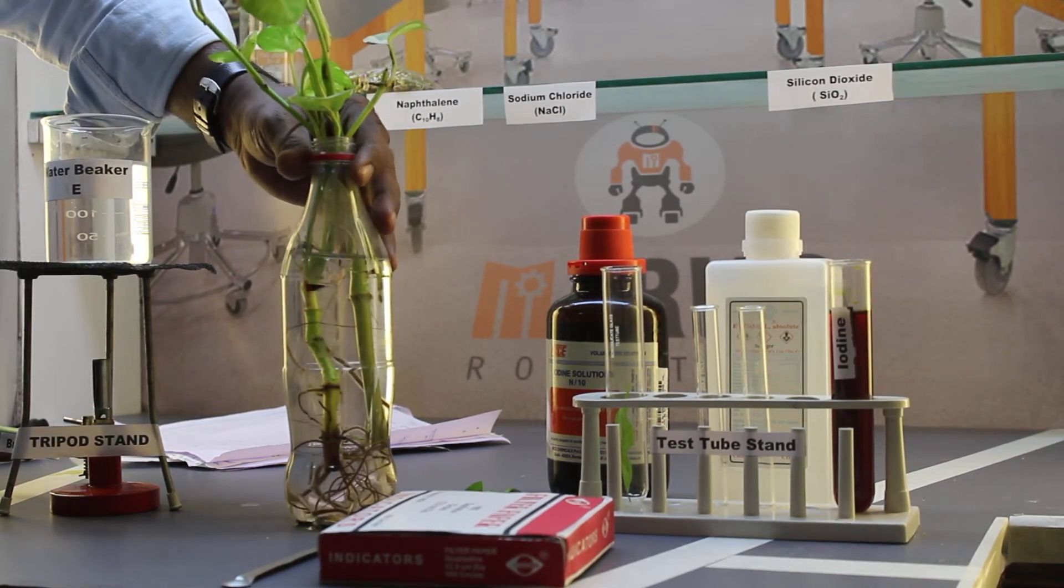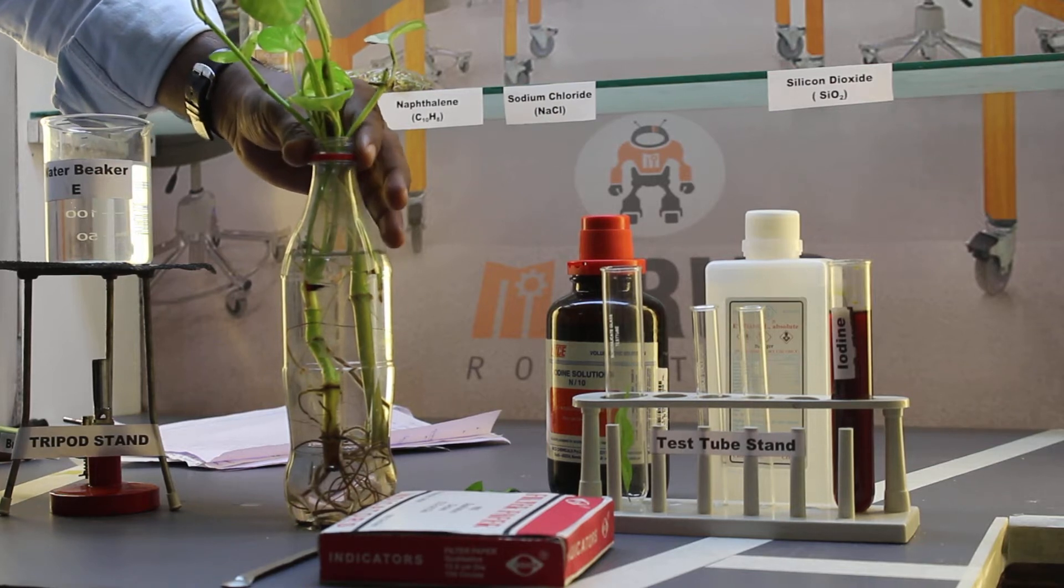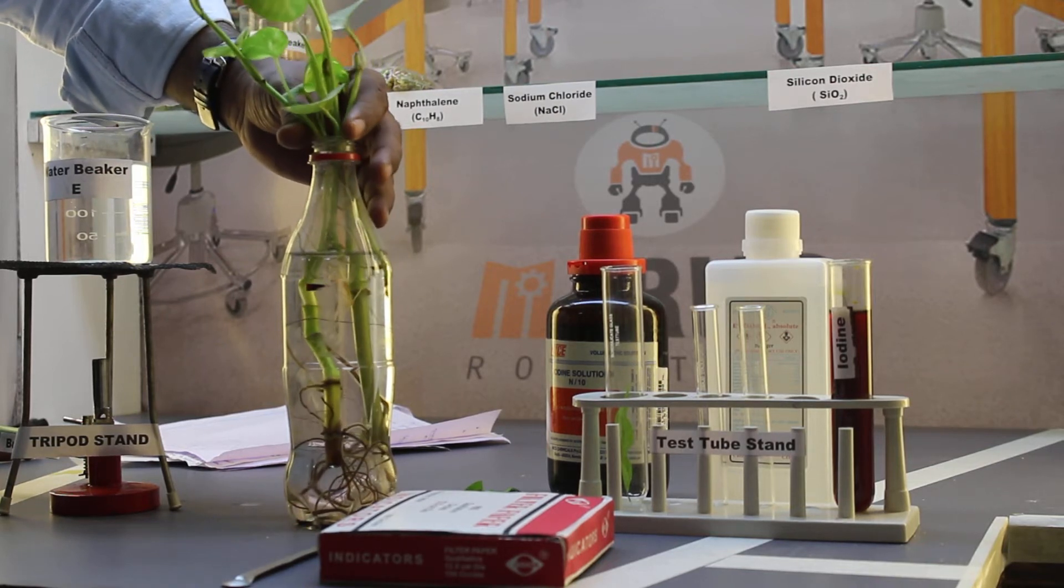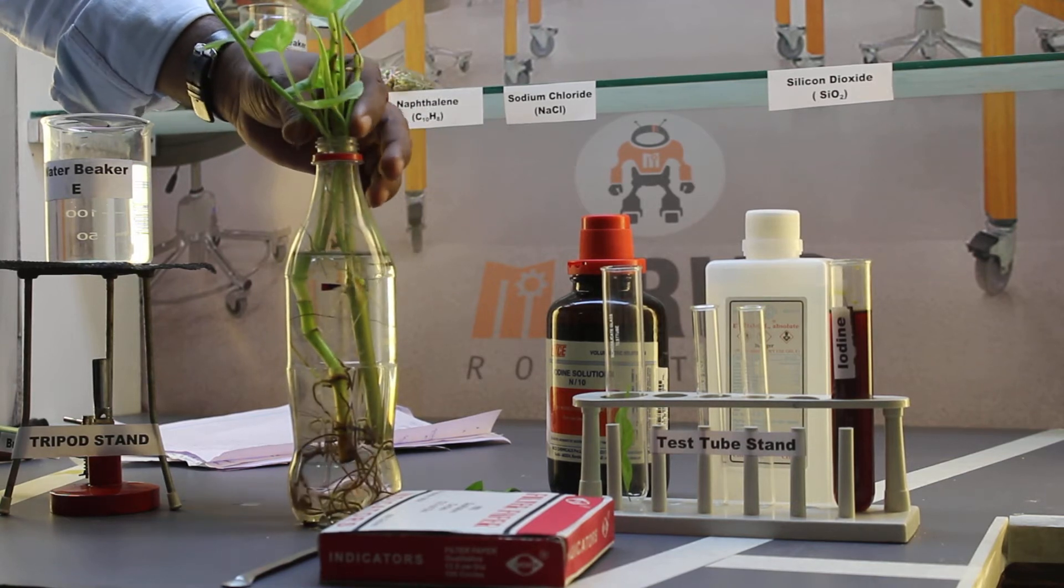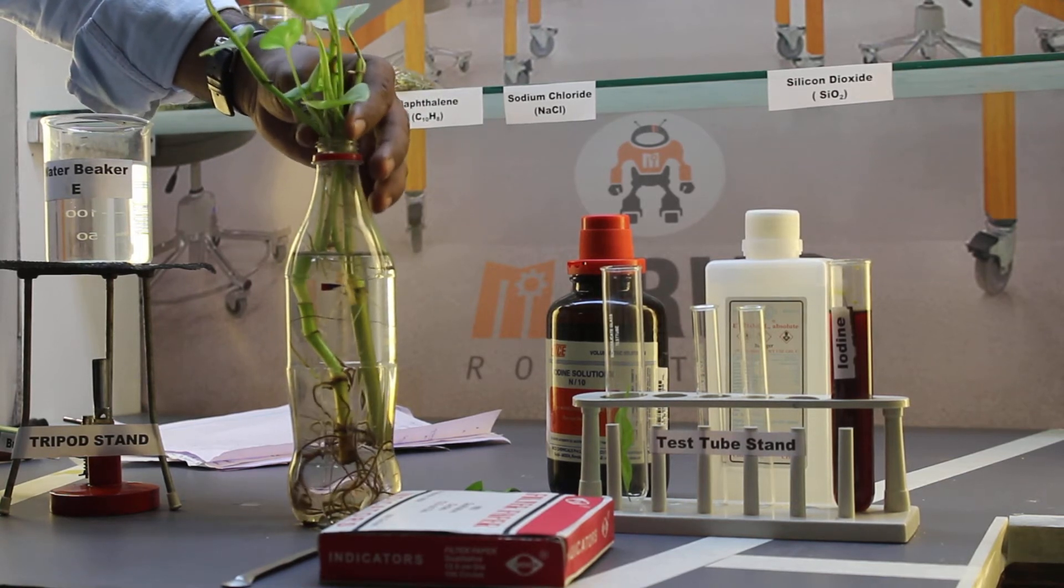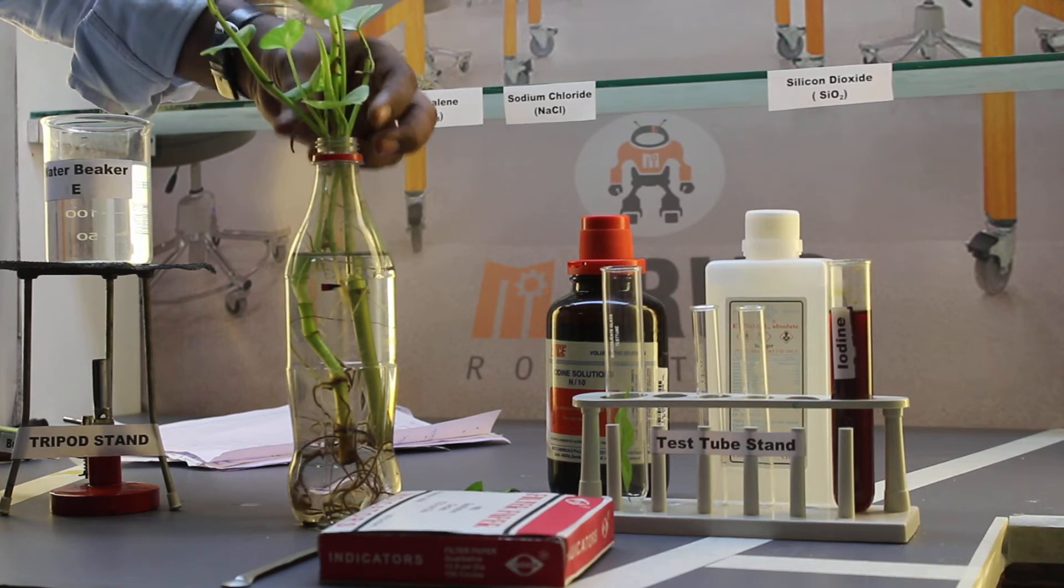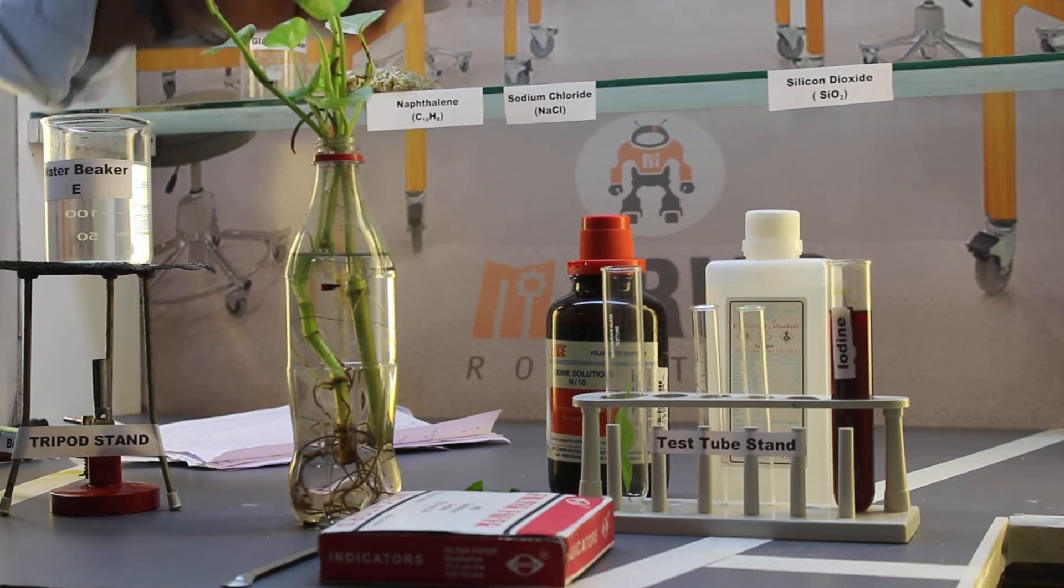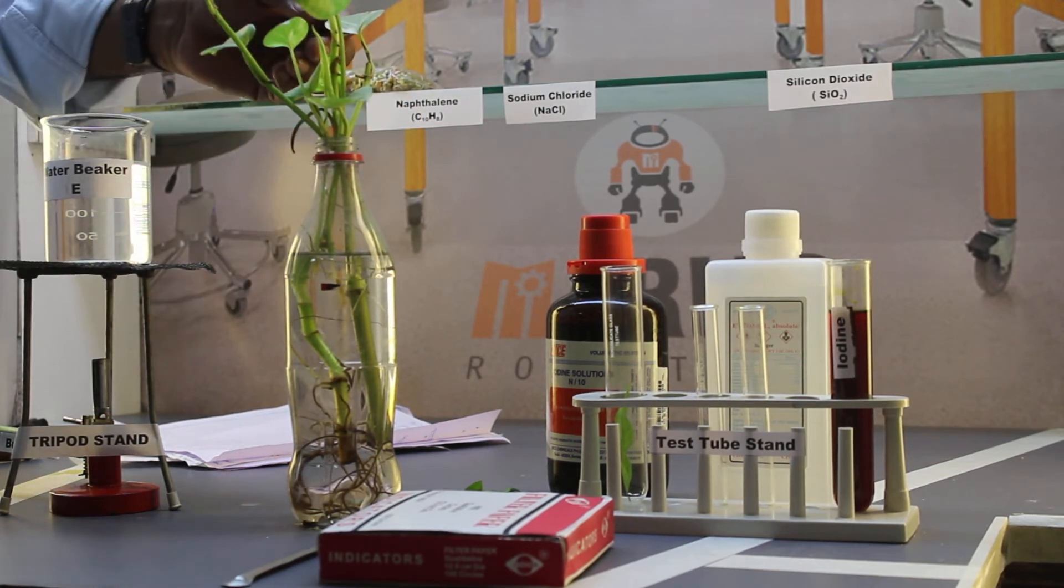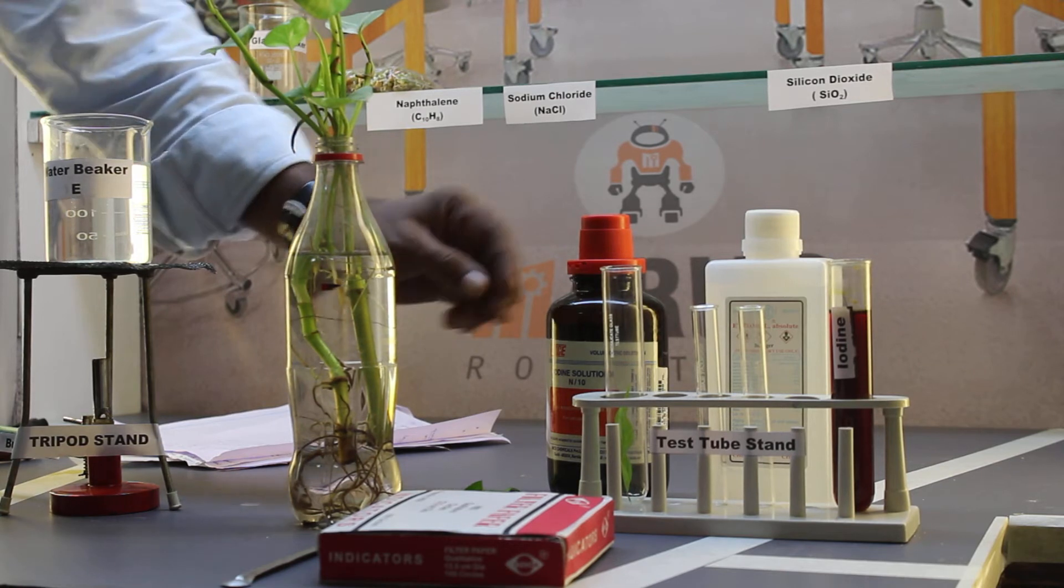Here we have a potted healthy plant. As we all know, all green plants are autotrophic organisms which perform the process of photosynthesis. Autotrophic organisms contain an important organelle called chloroplast which contains a green pigment called chlorophyll, which is involved in the process of photosynthesis.